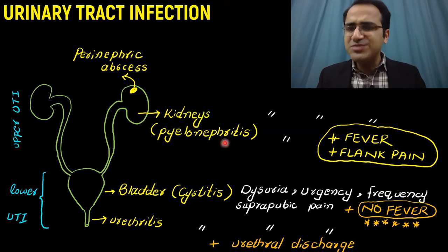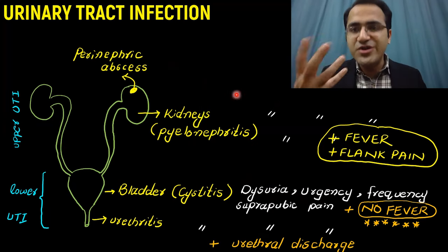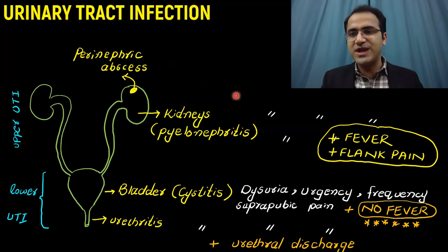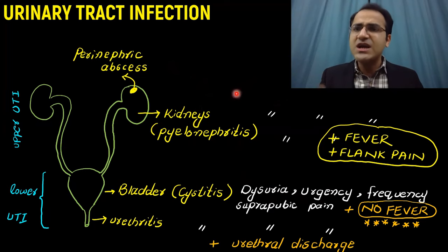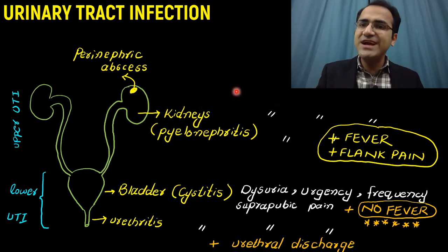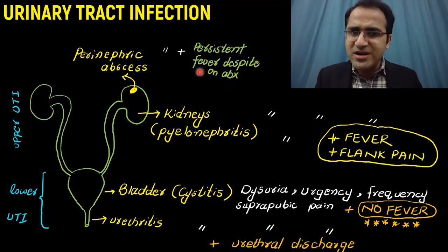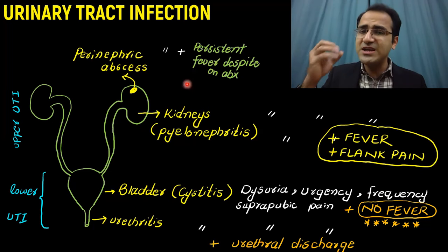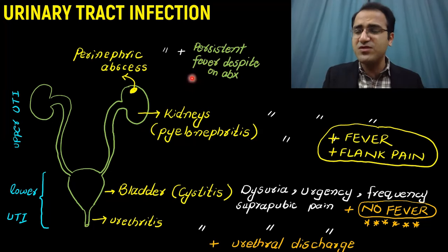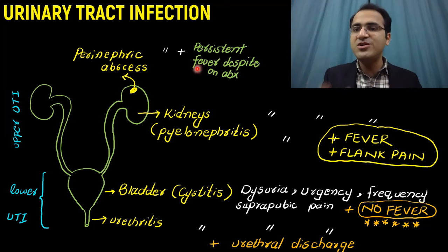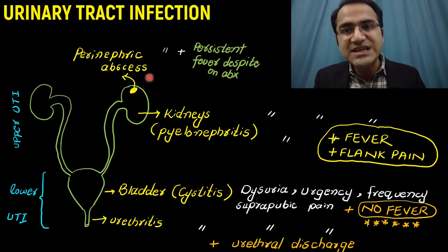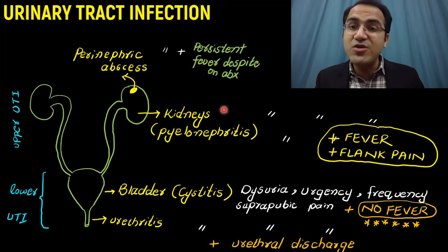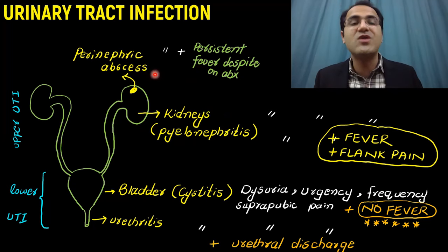Patients with pyelonephritis are given antibiotics but despite treatment they are not getting better — their fever spikes are getting higher and they are having persistent fever despite being on antibiotics. That is an indication that pyelonephritis has now progressed to a perinephric abscess.